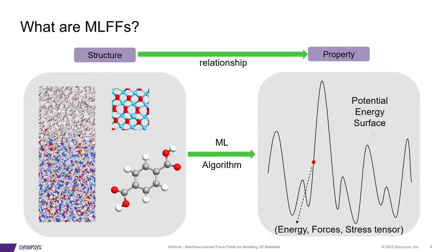The structures could be any atomic-scale model — it could be an interface, a bulk material, a molecule, or a 2D material, which really doesn't matter. The property is actually the density functional theory-based energy, forces, and stresses corresponding to the geometries that we use.